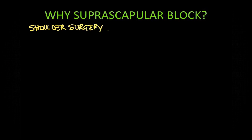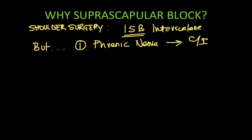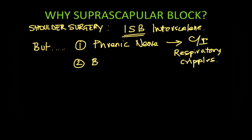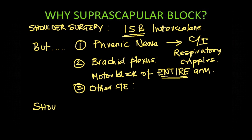For shoulder surgery, the most common block performed is the interscalene block, but there are a few problems with it. One of the most important is the involvement of the phrenic nerve, and therefore you might not want to do this block for patients who are respiratory cripples such as asthmatic or COPD patients. Another problem is that you get a lot of brachial plexus involvement culminating in unnecessary motor block which patients may object to, and thirdly there are other side effects such as recurrent laryngeal nerve involvement.